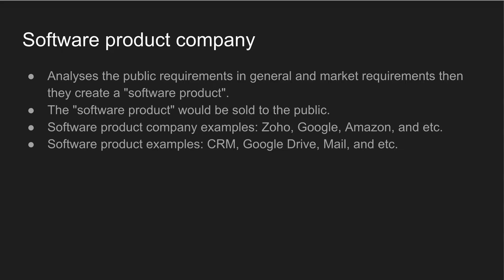Software product companies — for example, Google and Amazon — publish products for all customers and release them to the market.